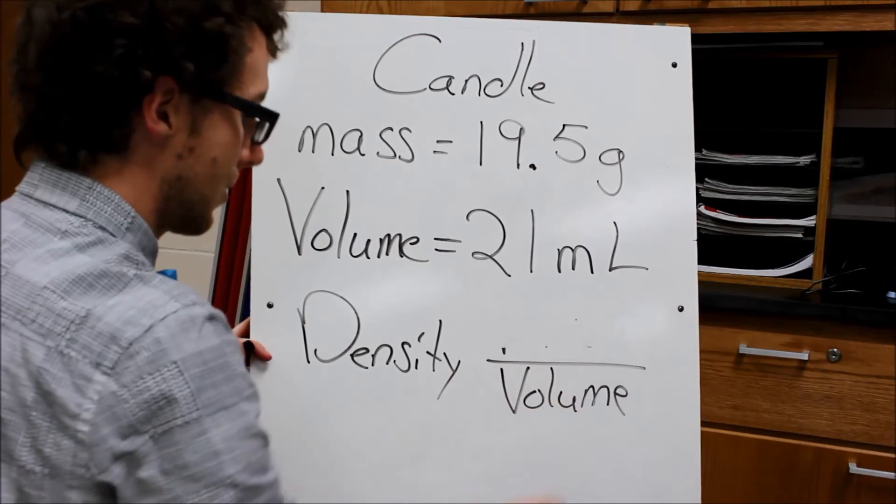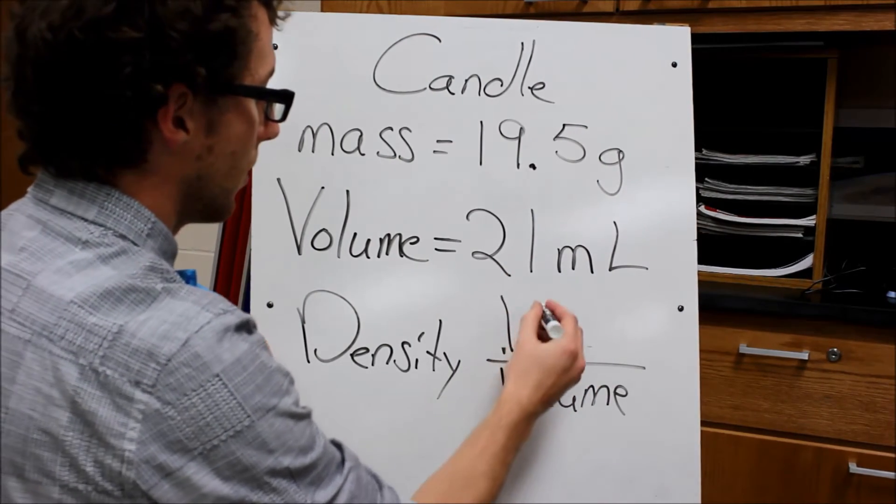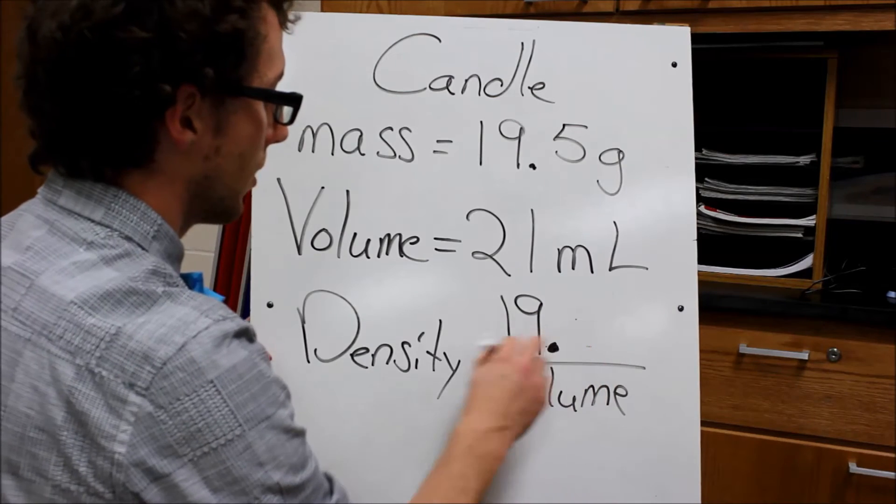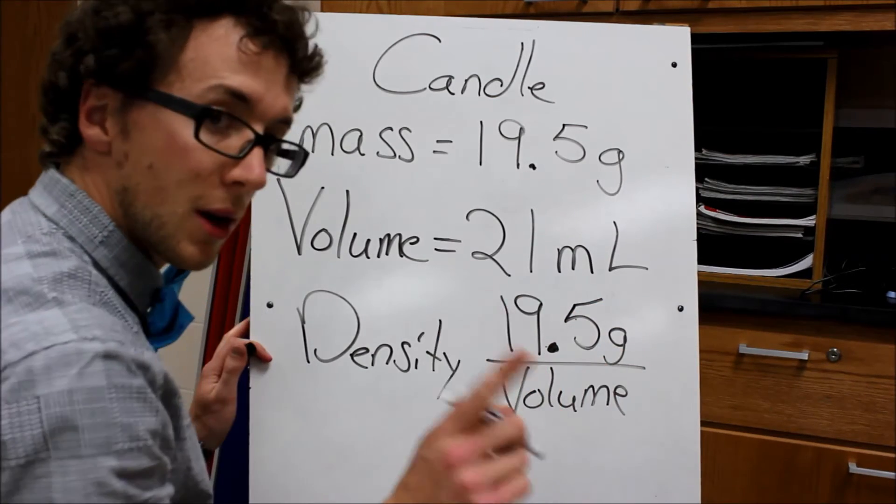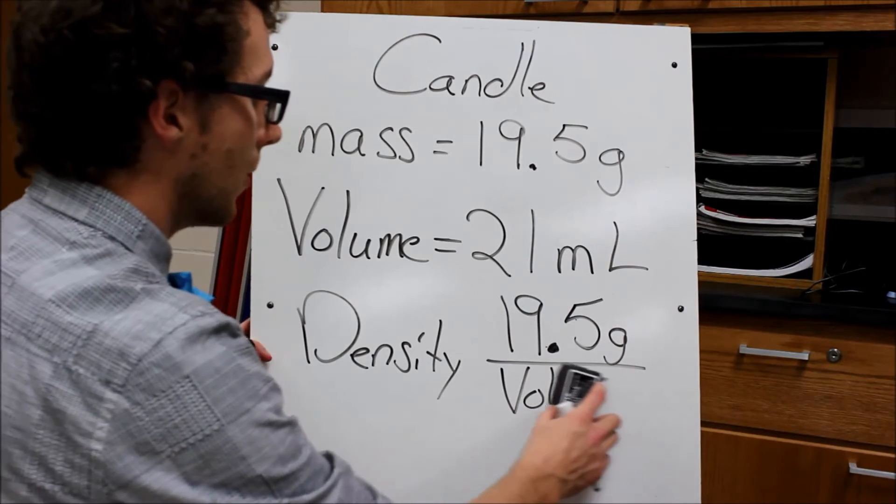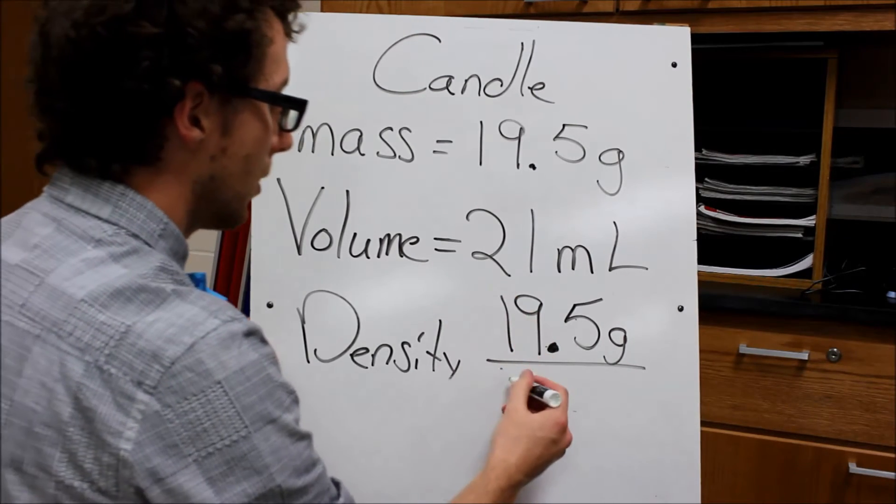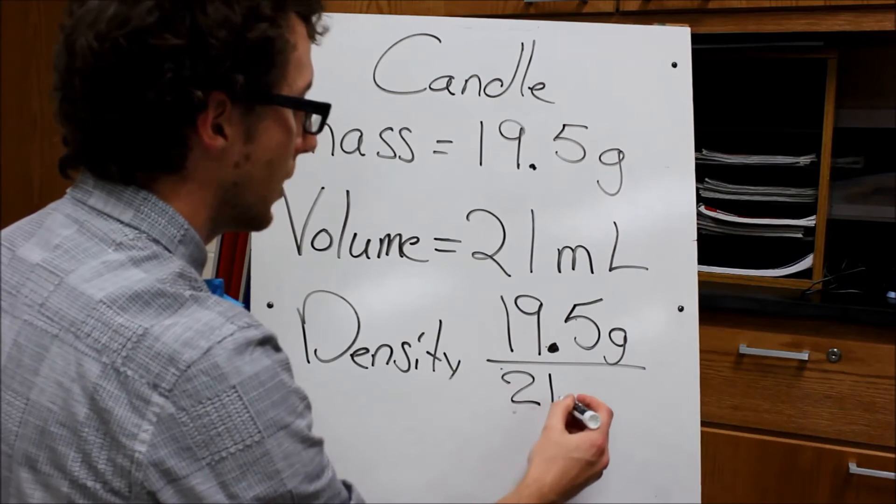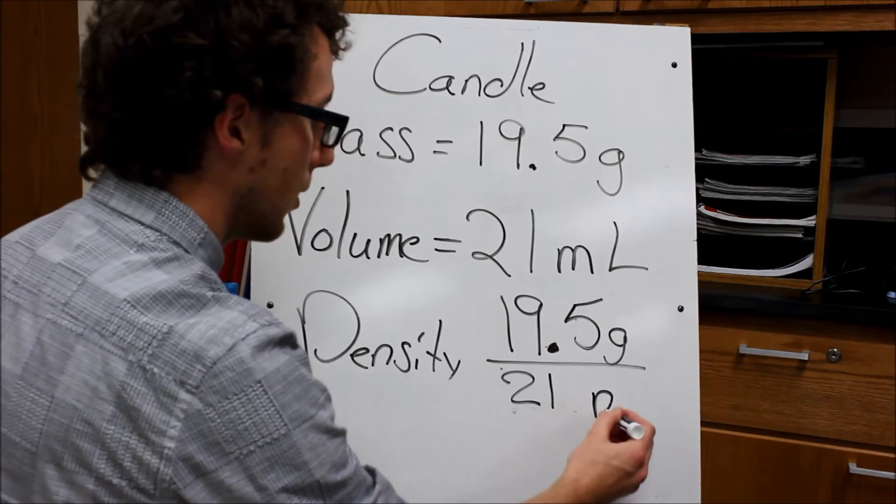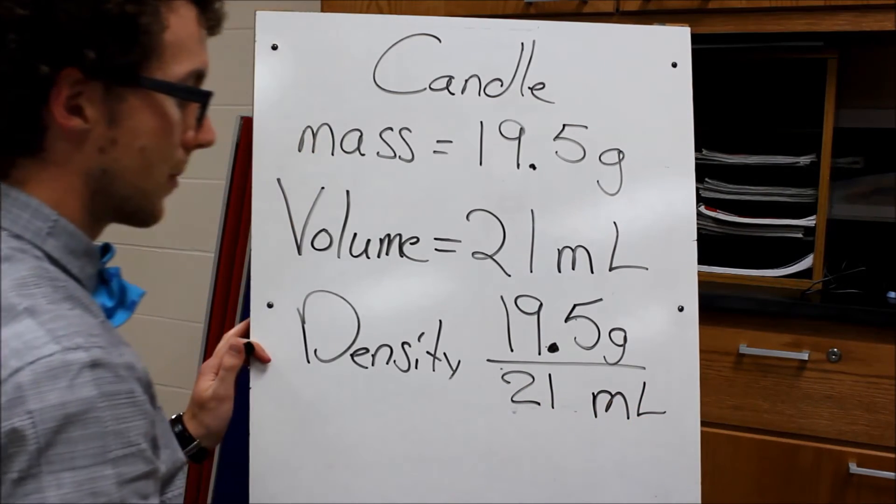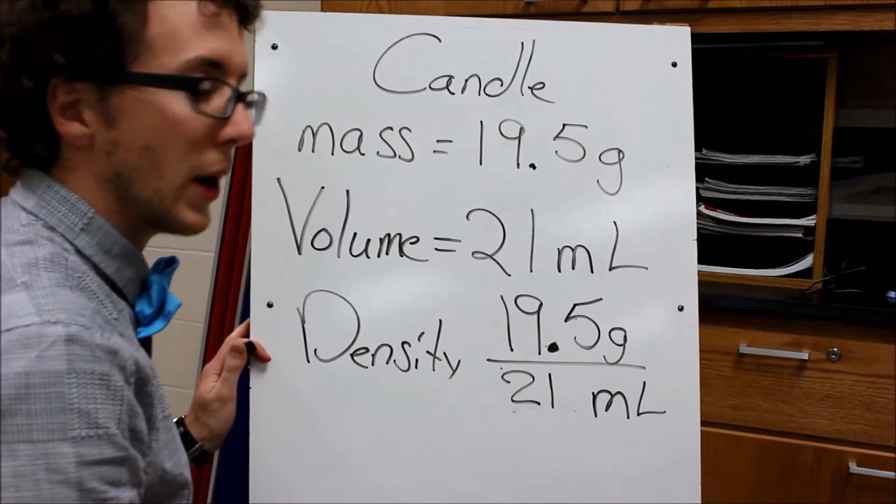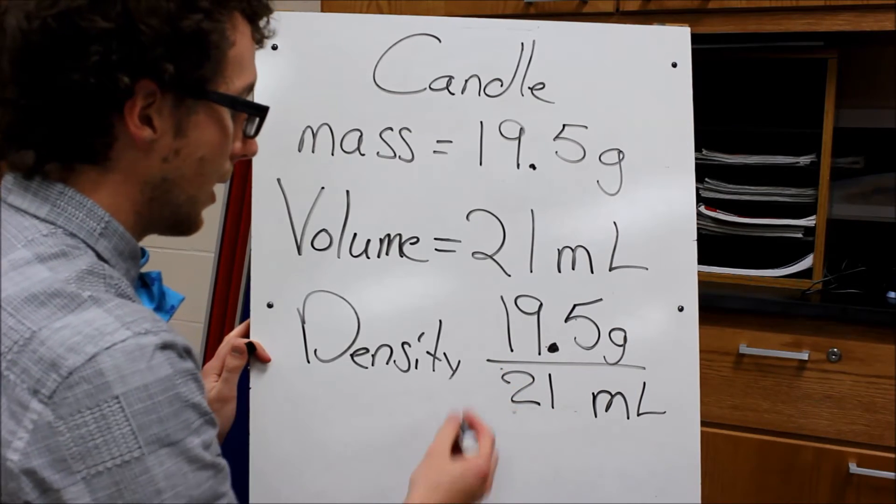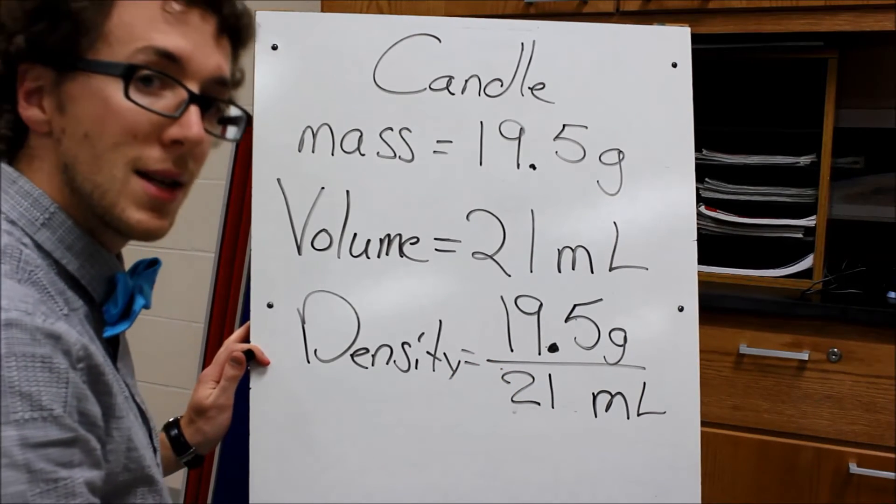So I have a mass and I have a volume, so I'm able to calculate these values. So I'm just going to replace the mass, 19.5 grams. I want to make sure I label. And then with my volume, the volume is 21 milliliters. Now I can use my calculator at this point to calculate my value and it would get me my density.